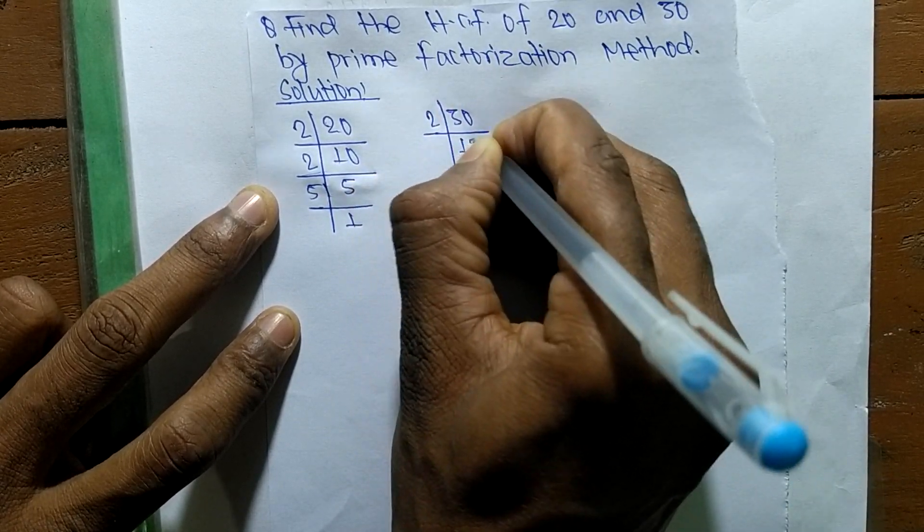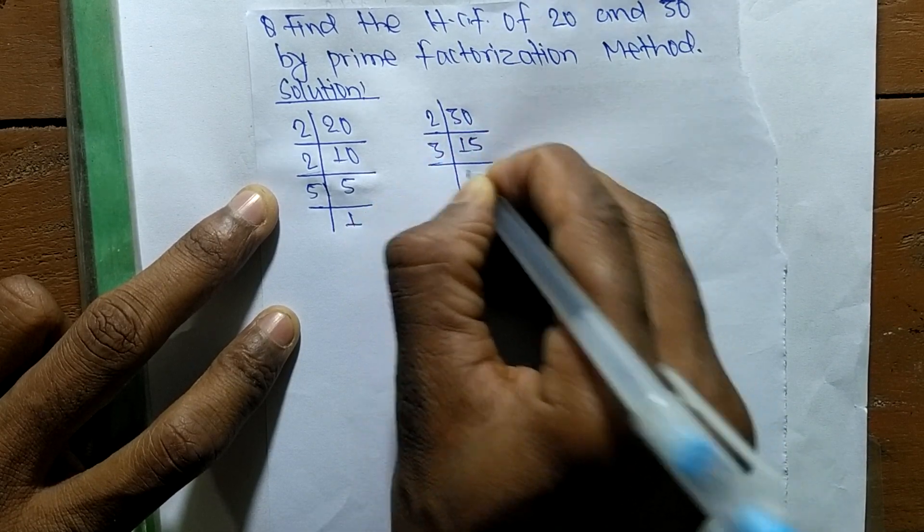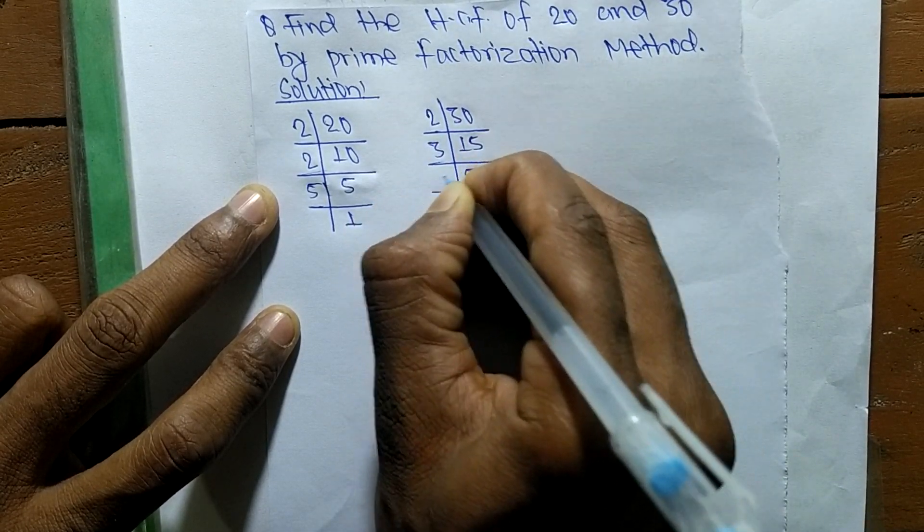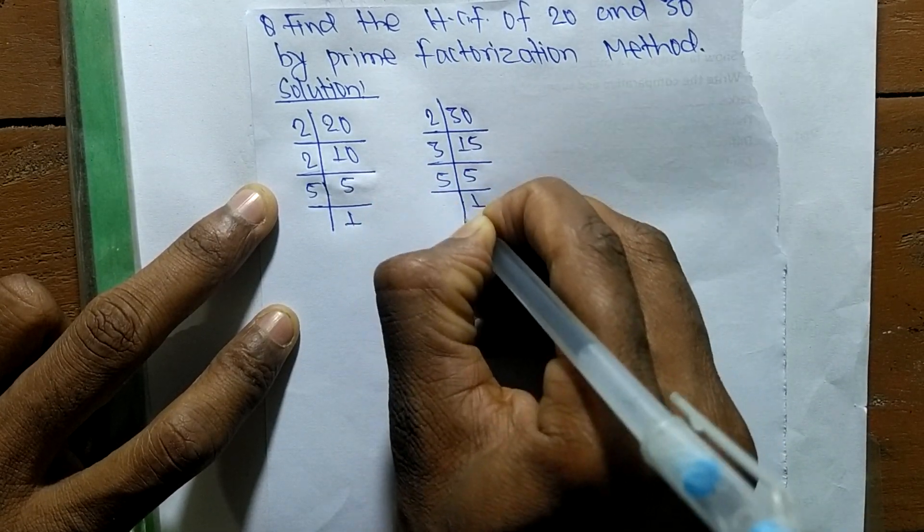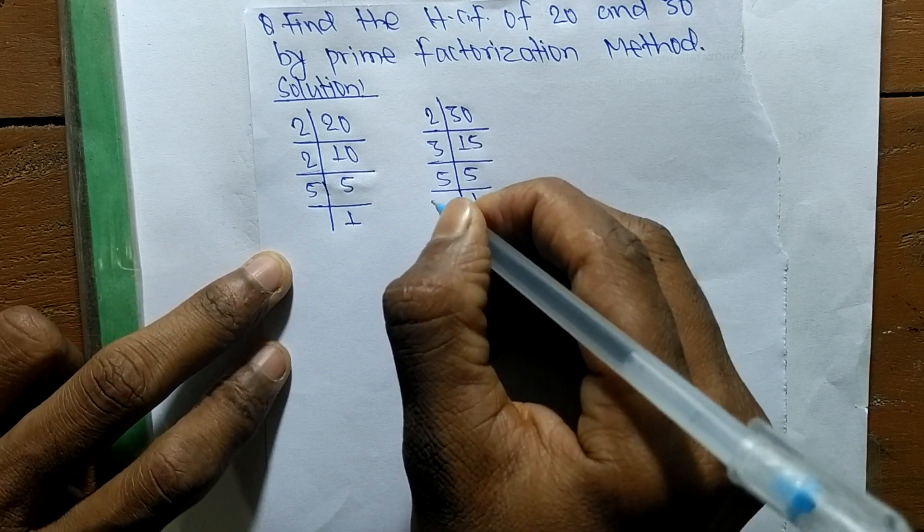2 times 15 equals 30, 3 times 5 equals 15, and 5 times 1 equals 5. So from these prime factors we can write: